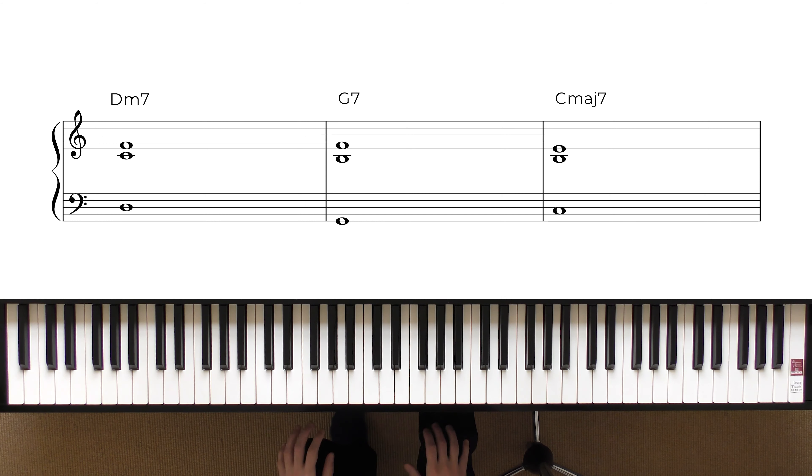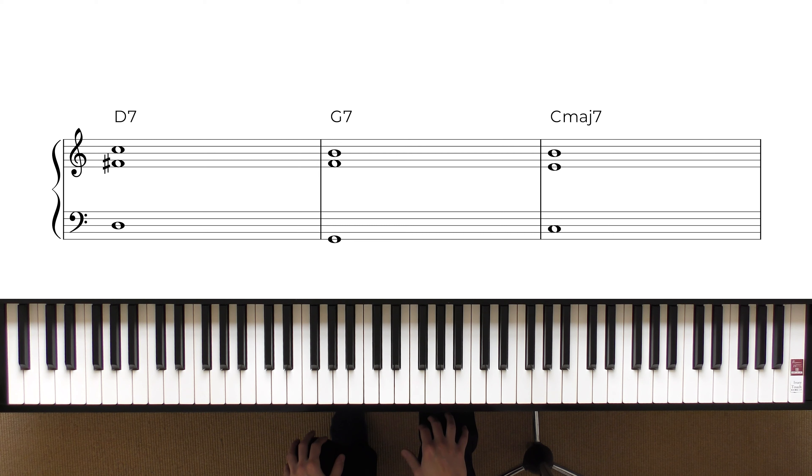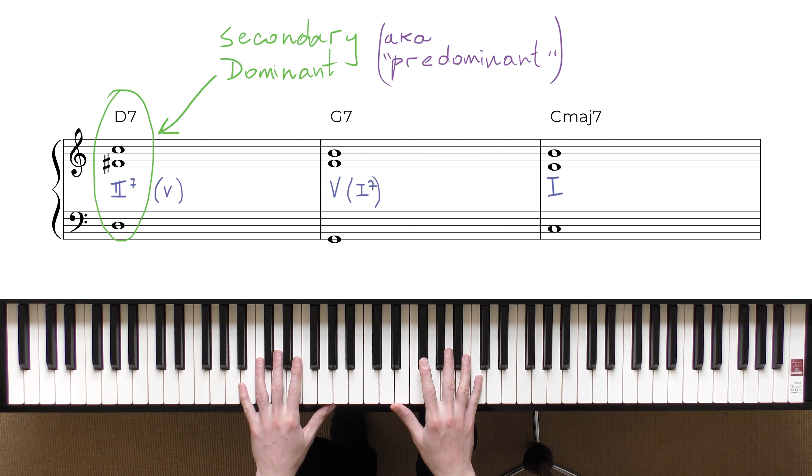And now we are going to try something a bit different, which is using a secondary dominant, which is the dominant for the 5th degree, or the dominant for the dominant, which is D7 instead of Dm7.